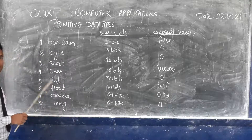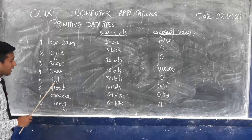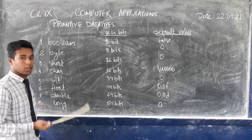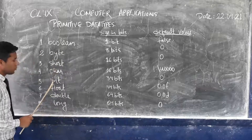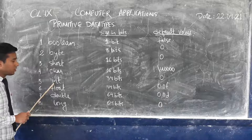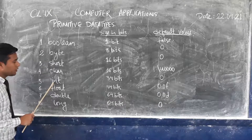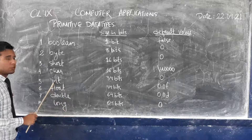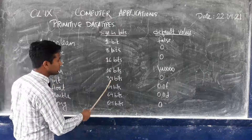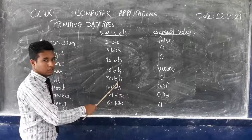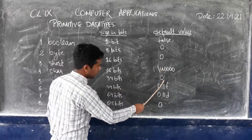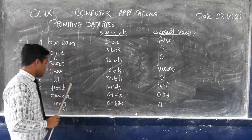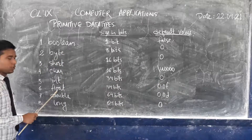The fifth type is int, which means integer, and it deals with whole numbers. Its size is 32 bits and the default value of int or integer is 0.